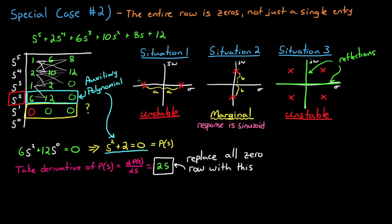In this case, the derivative is 2s, and you can replace the row of all 0's with this. So the first coefficient is 2, and then there are no other coefficients afterwards, so the rest of it is just 0.